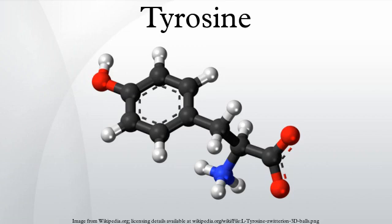Tyrosine, or 4-hydroxyphenylalanine, is one of the 22 amino acids that are used by cells to synthesize proteins. Its codons are UAC and UAU. It is a non-essential amino acid with a polar side group.